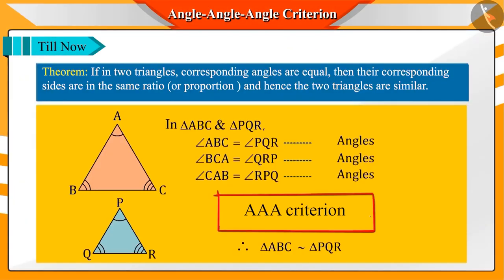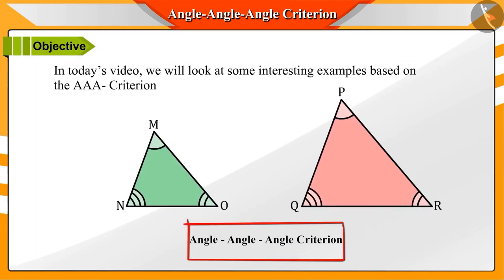Welcome to this video. In the previous video, we learned about the AAA criteria for determining similarity of triangles. Today, in this video, we will look at some interesting examples based on it.